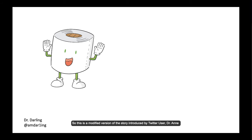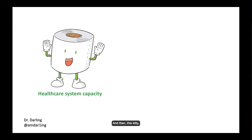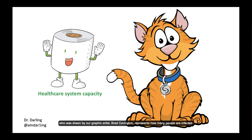This is a modified version of the story introduced by Twitter user Dr. Anne Marie Darling, and you can see her Twitter handle on the bottom left-hand side of the screen. I want you to imagine that this toilet paper roll represents the healthcare system capacity. And then this kitty, who was drawn by our graphic artist Brad Covington, represents how many people are infected with COVID-19.